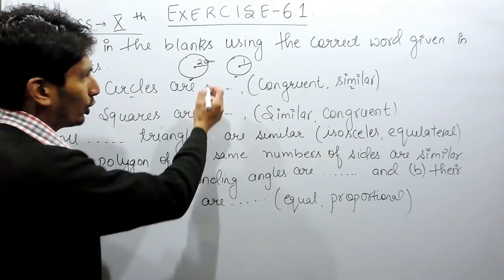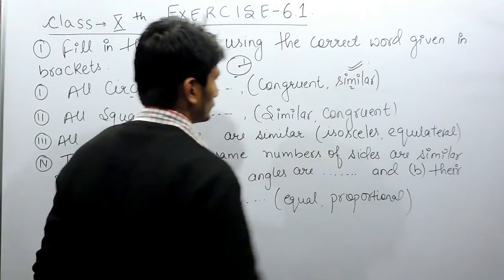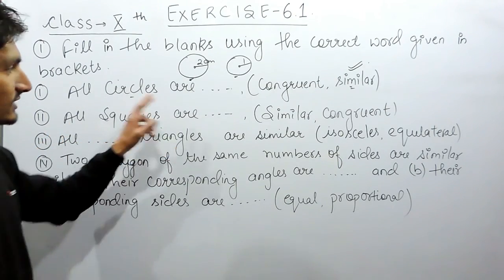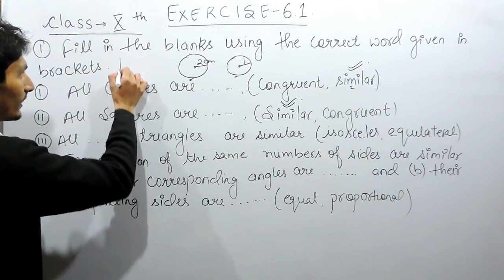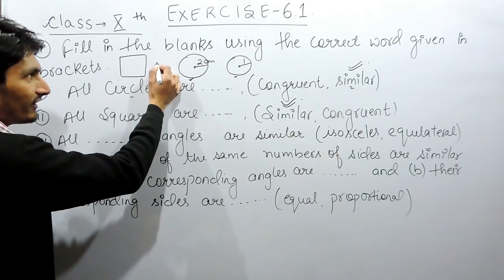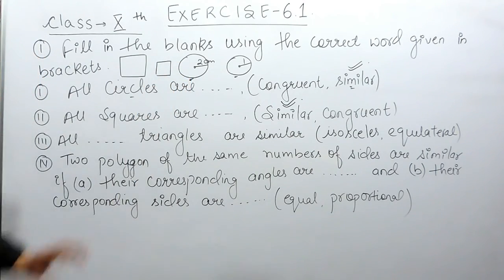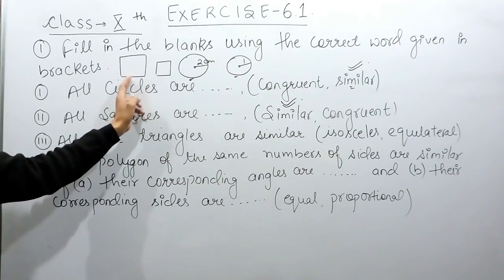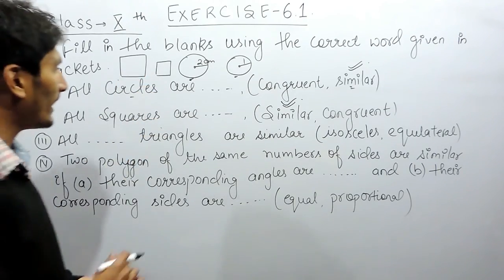So all circles should be similar. Similarly, all squares must also be similar. If I make a square of side 2 it will look like this, but if I make a square of side 1 it will look like this. Obviously these two are not congruent, but they are similar because the shape is the same but the size is different.